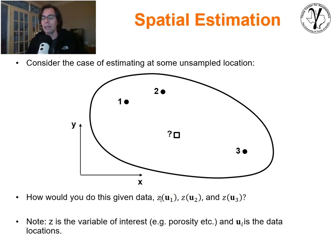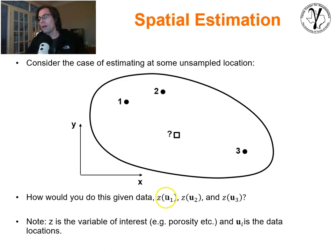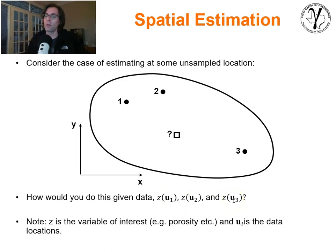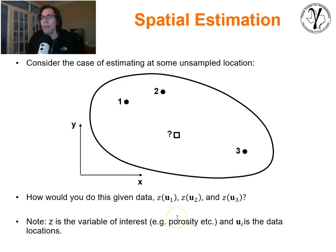At the data locations 1, 2, and 3, we have Z measured — it's not a random variable, it's a data point, shown in lower case. We have our usual location vector U in bold. The Z could be any variable of interest — it could be porosity, it could be permeability. For most of this discussion, let's just assume we're dealing with porosity.